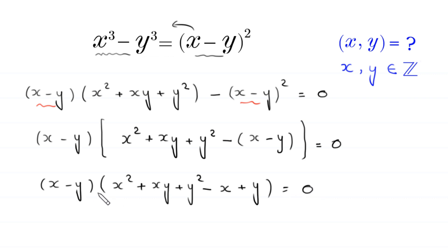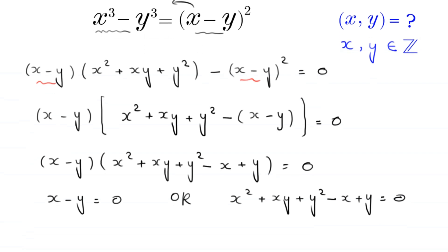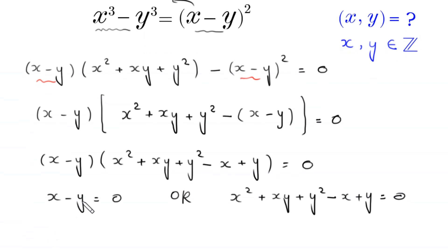From here, either the expression x minus y is equal to 0, or the expression x squared plus xy plus y squared minus x plus y is equal to 0. From the first equation, if we move negative y to the right hand side, this implies that x is equal to y.